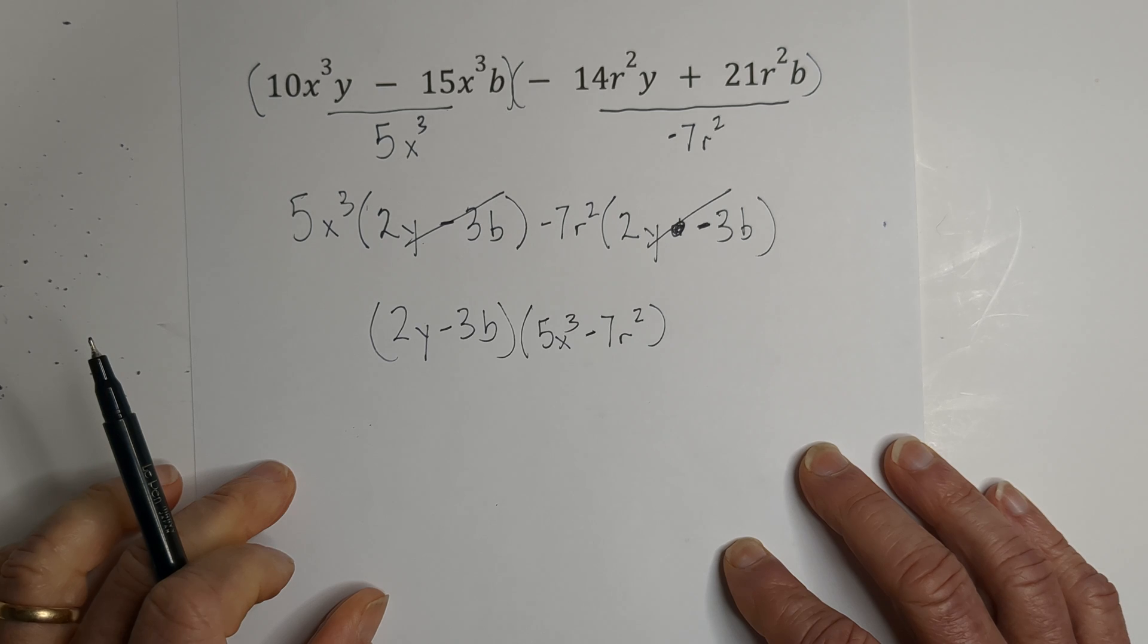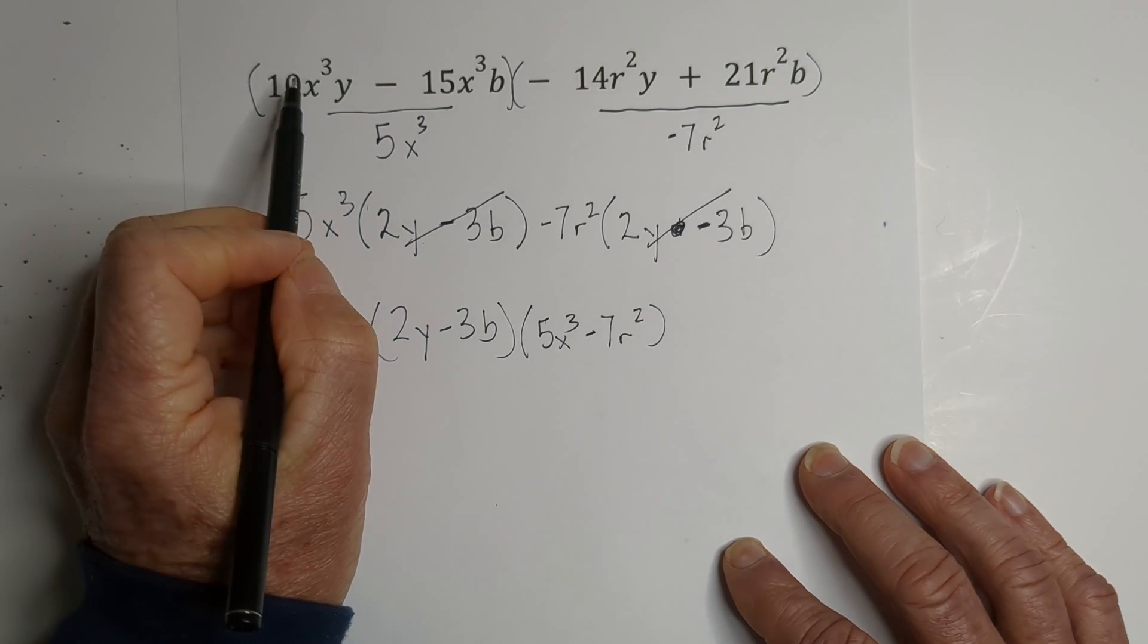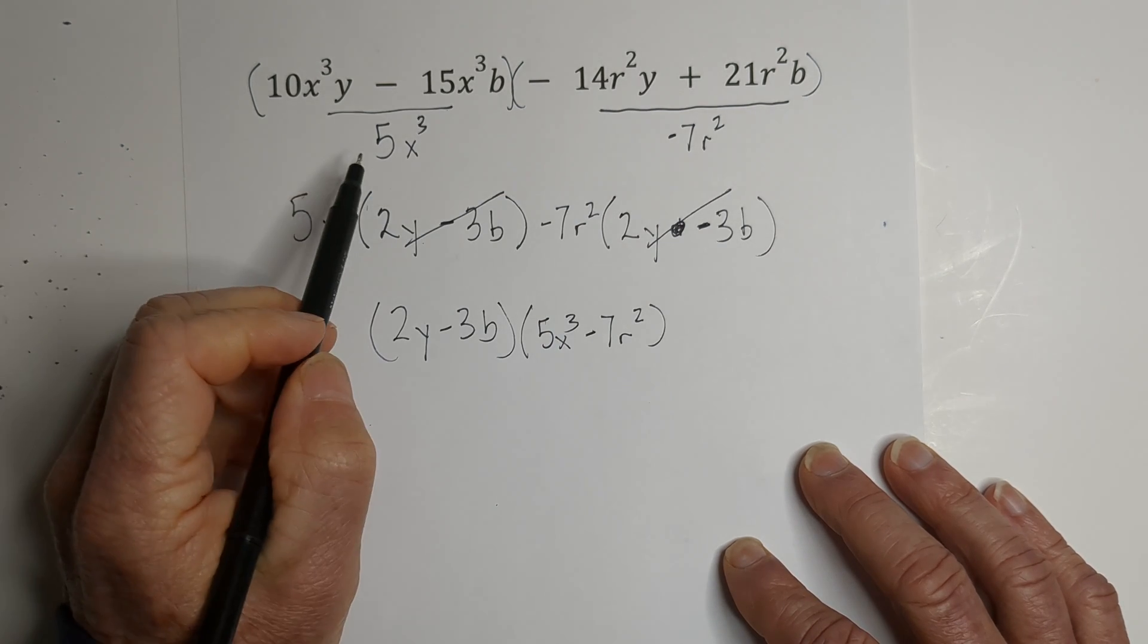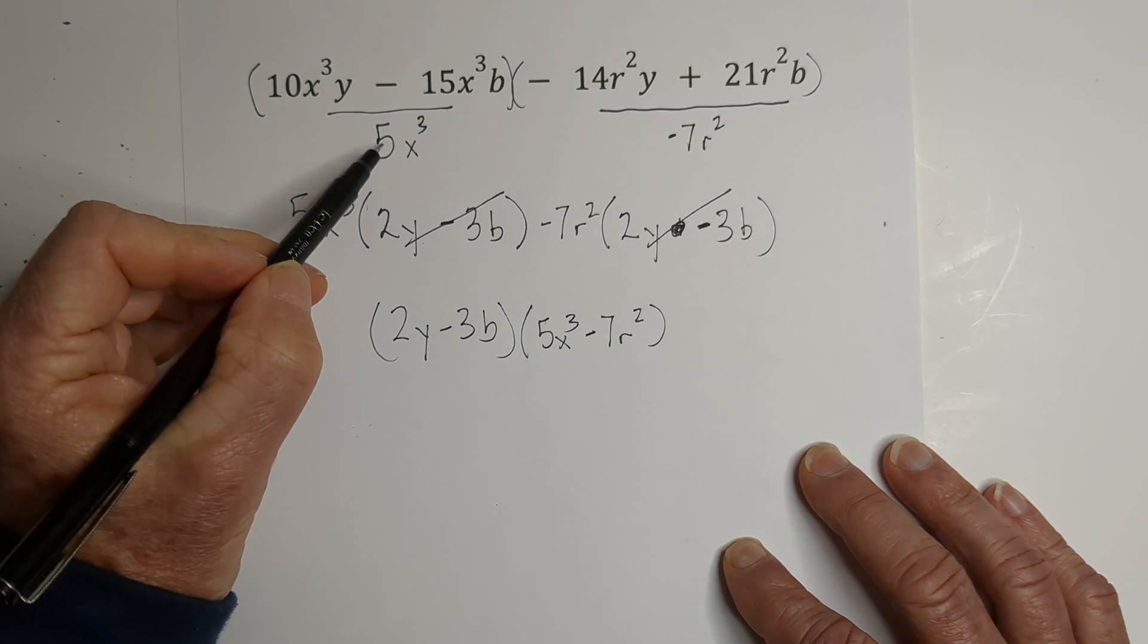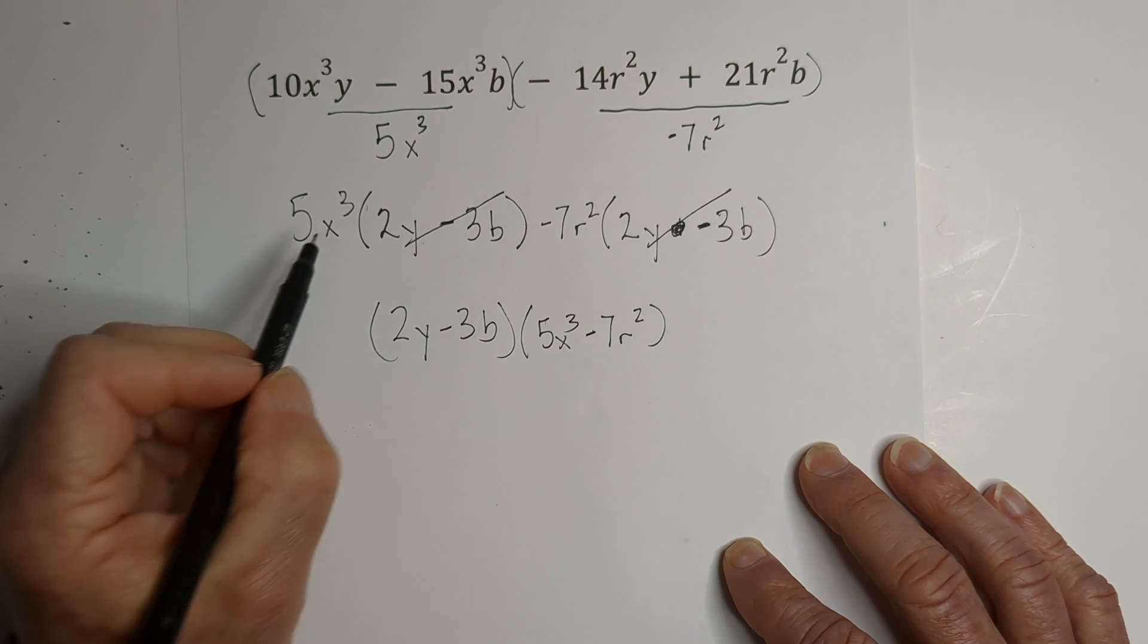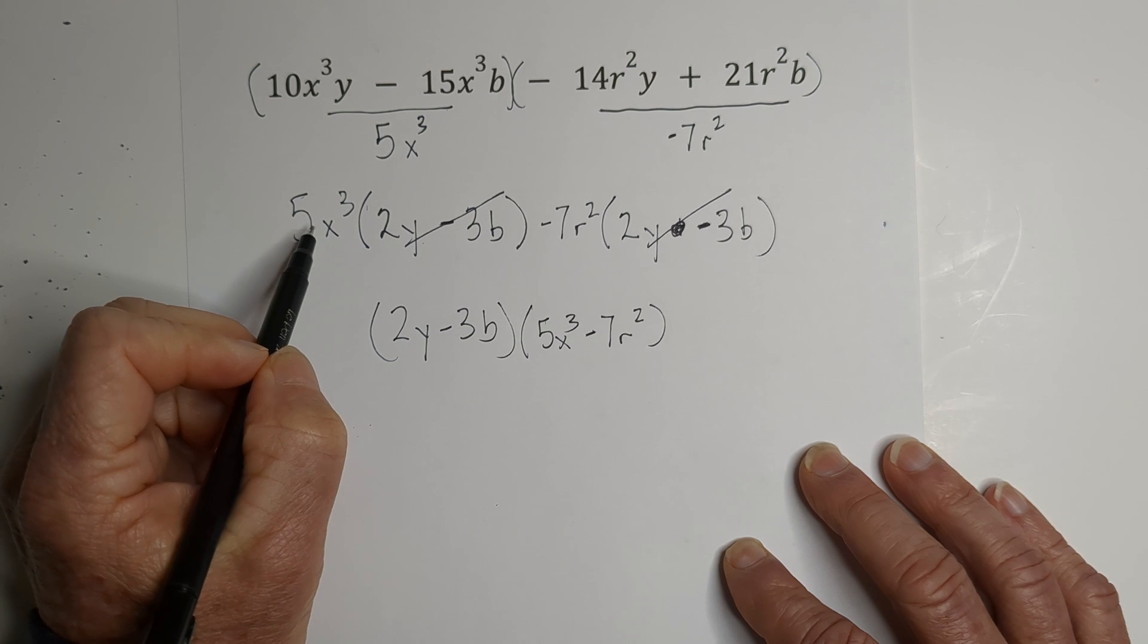And then we have 5x cubed minus 7r square. So this is what we have for factoring using grouping of this term. So in summary real fast. Remember we have 4 terms. We found the GCF of this group. GCF of this group. We divided through.